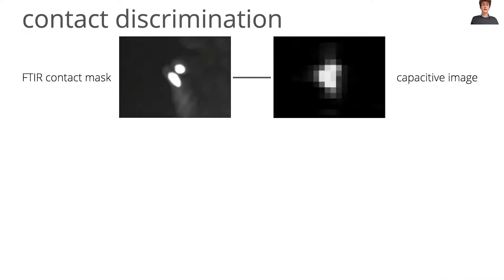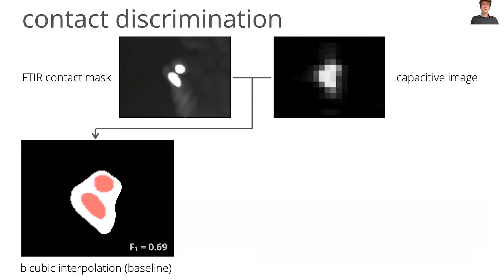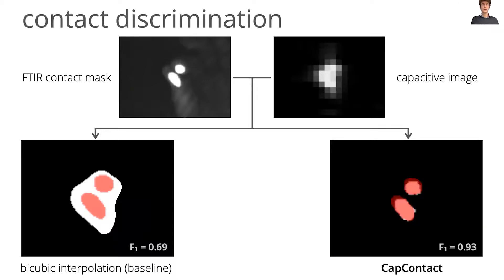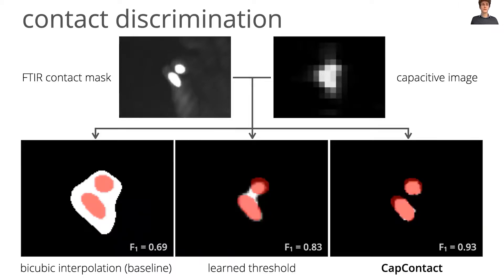In terms of discriminating adjacent contacts, the baseline often blends them, resulting in an F1 score of only 0.69, whereas CapContact achieves an F1 score of 0.93. Again, our learned threshold achieves an accuracy that is in between both.